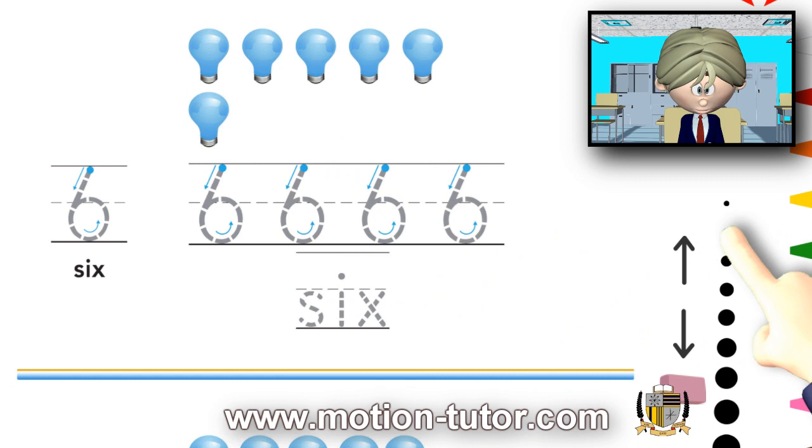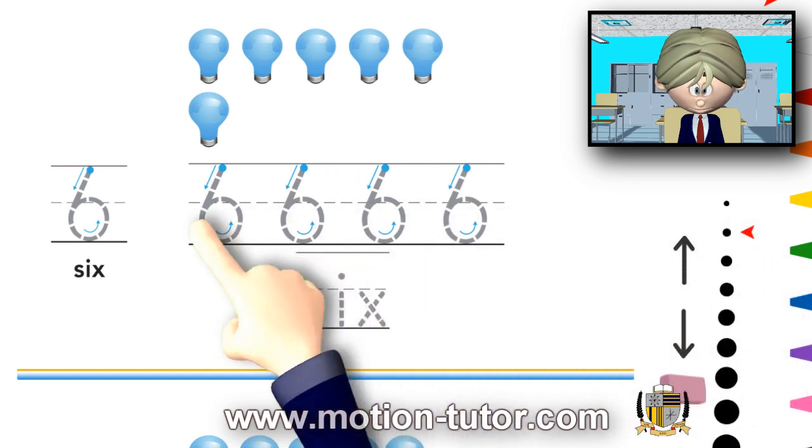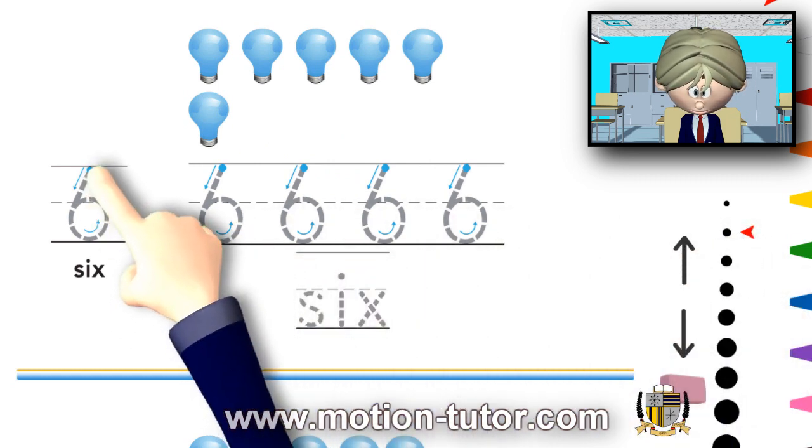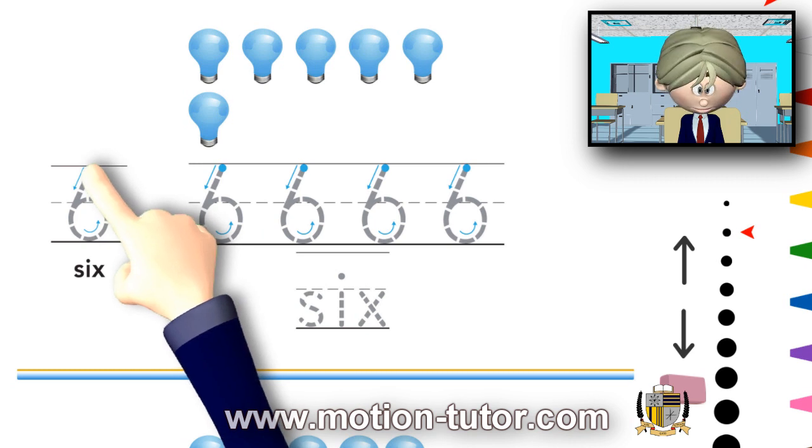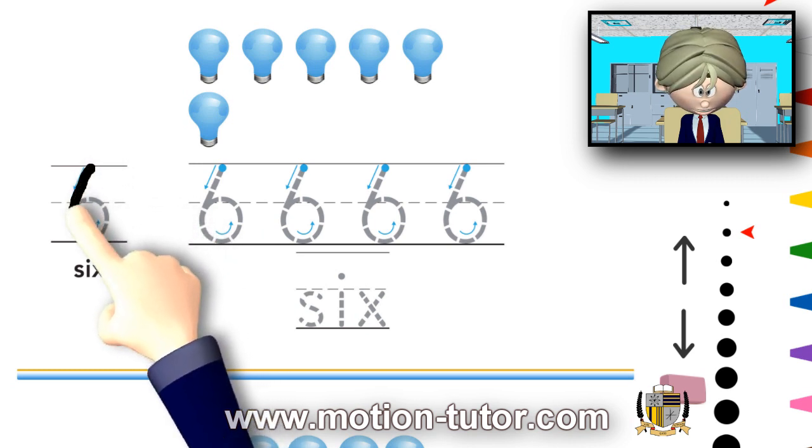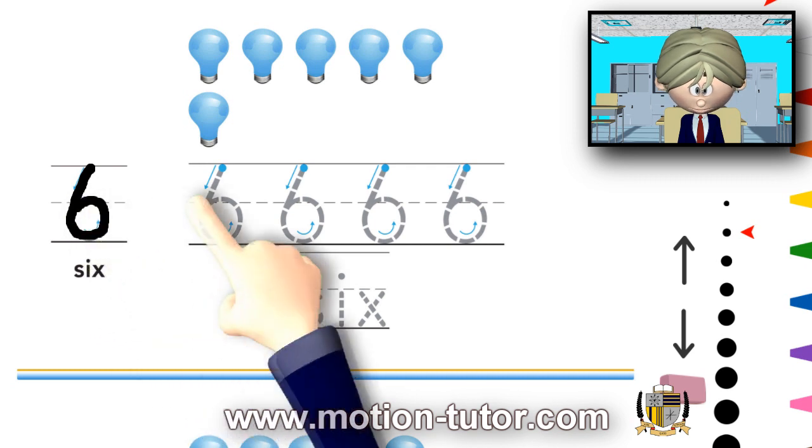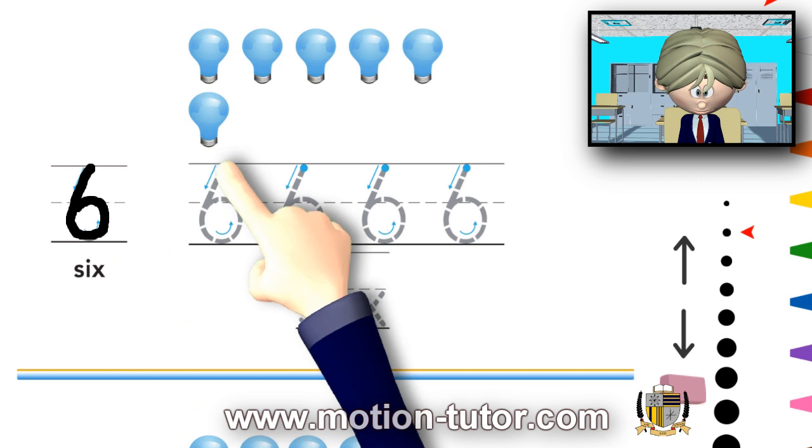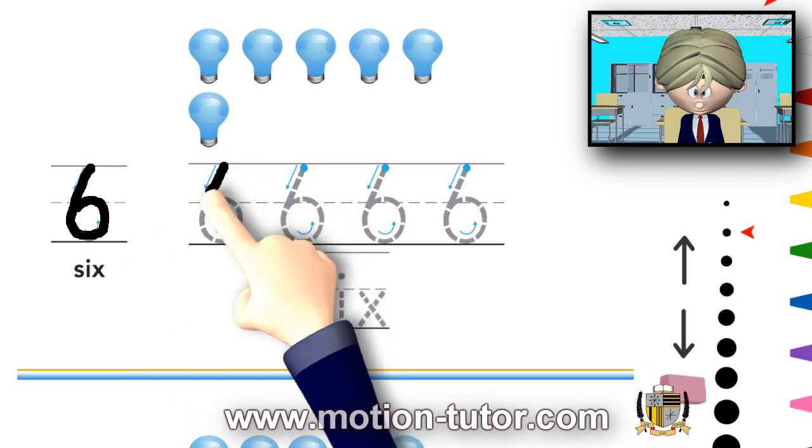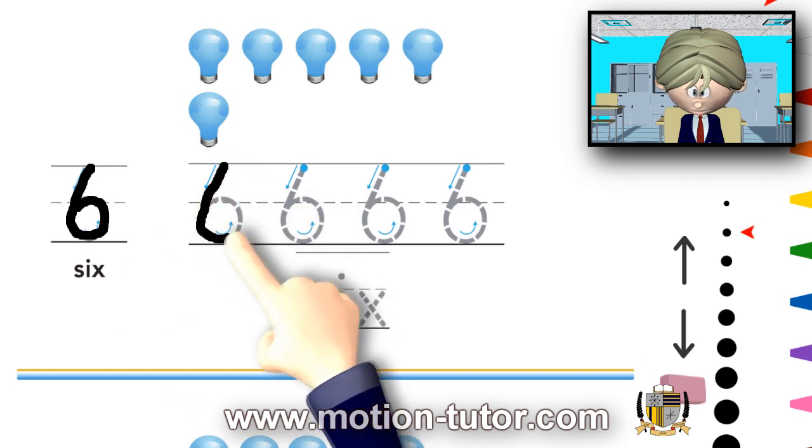Now, I will be writing the number 6. And this is how we do it. We start from up here, and go down and around like that. Start up here, and then go down and around like that.